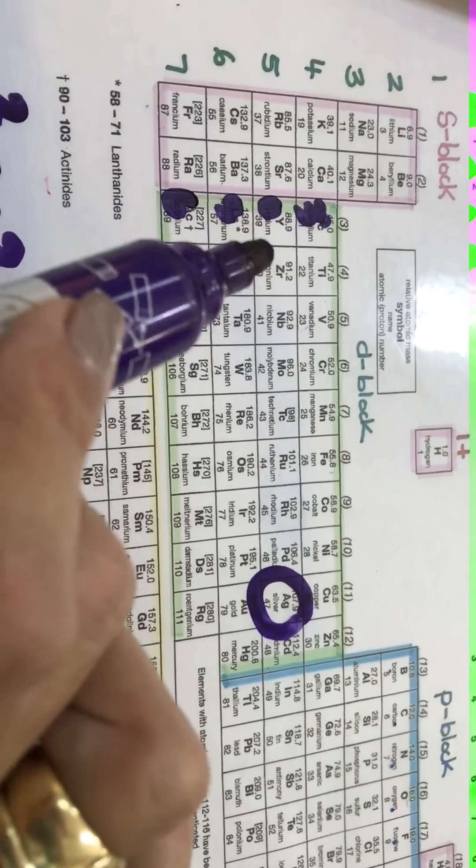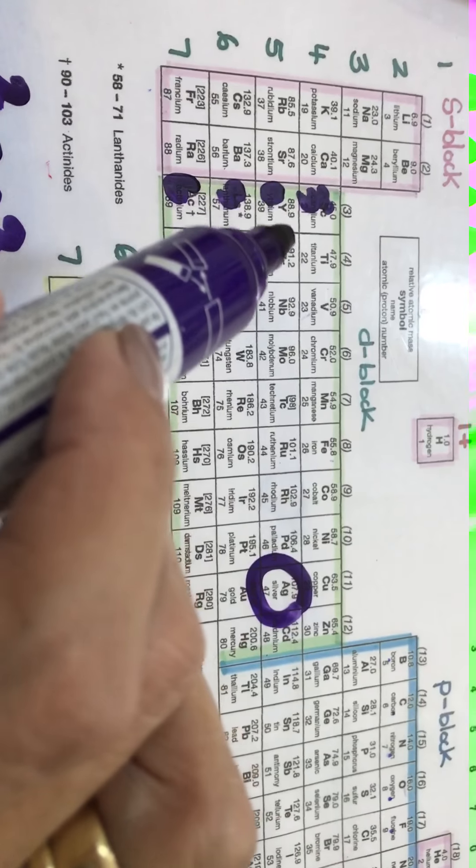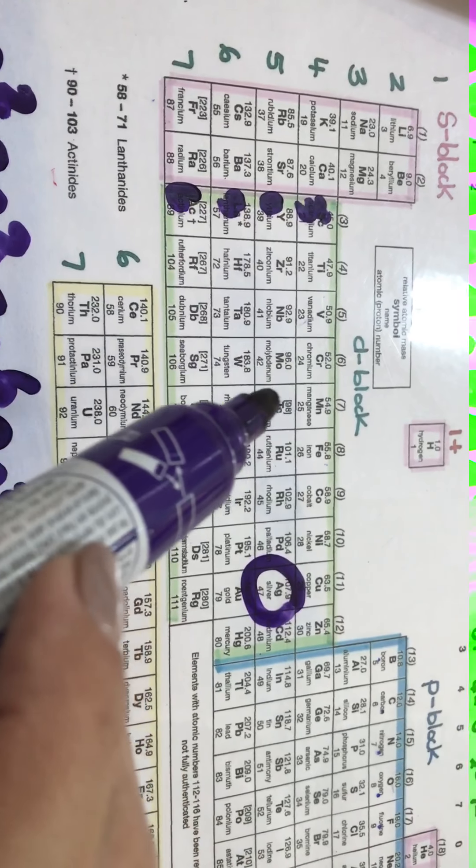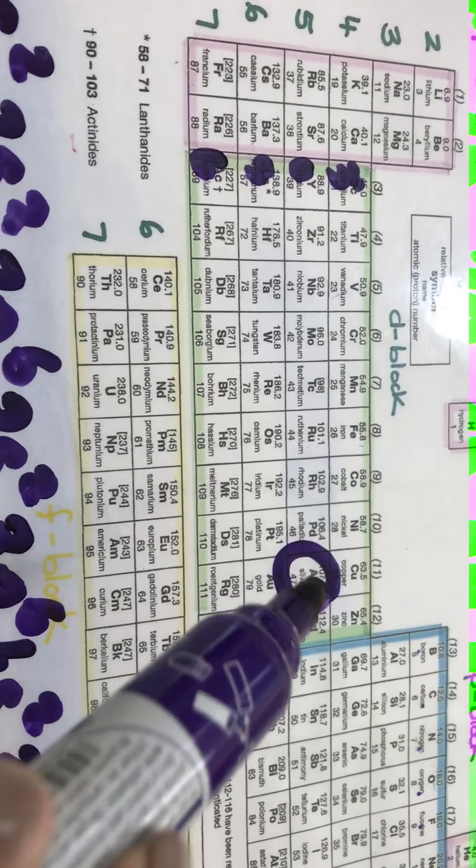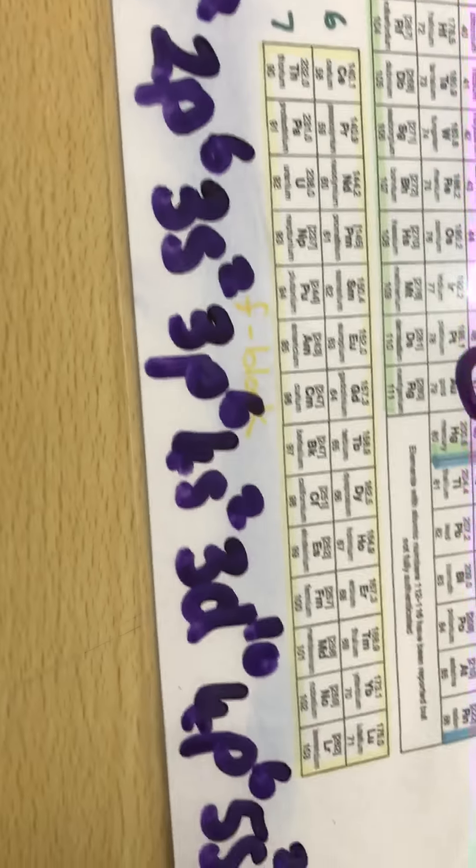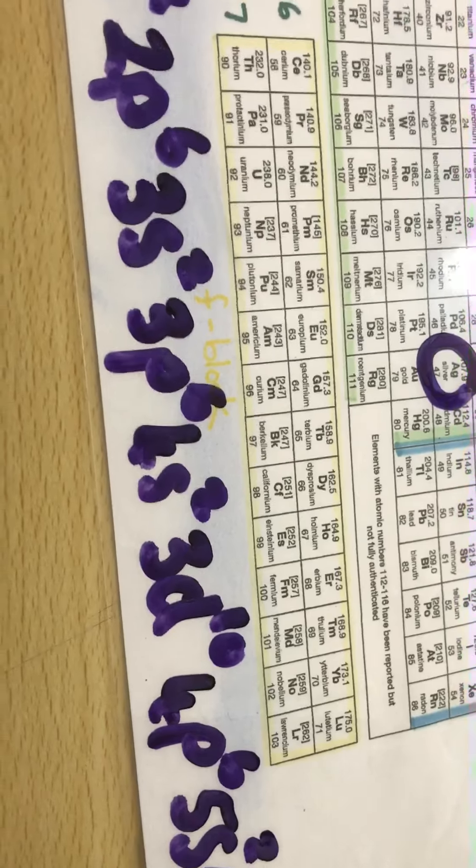And when I get to the 4d I count my blocks: 1, 2, 3, 4, 5, 6, 7, 8, 9. So I have to count up to and including the element. So that means 4d9.